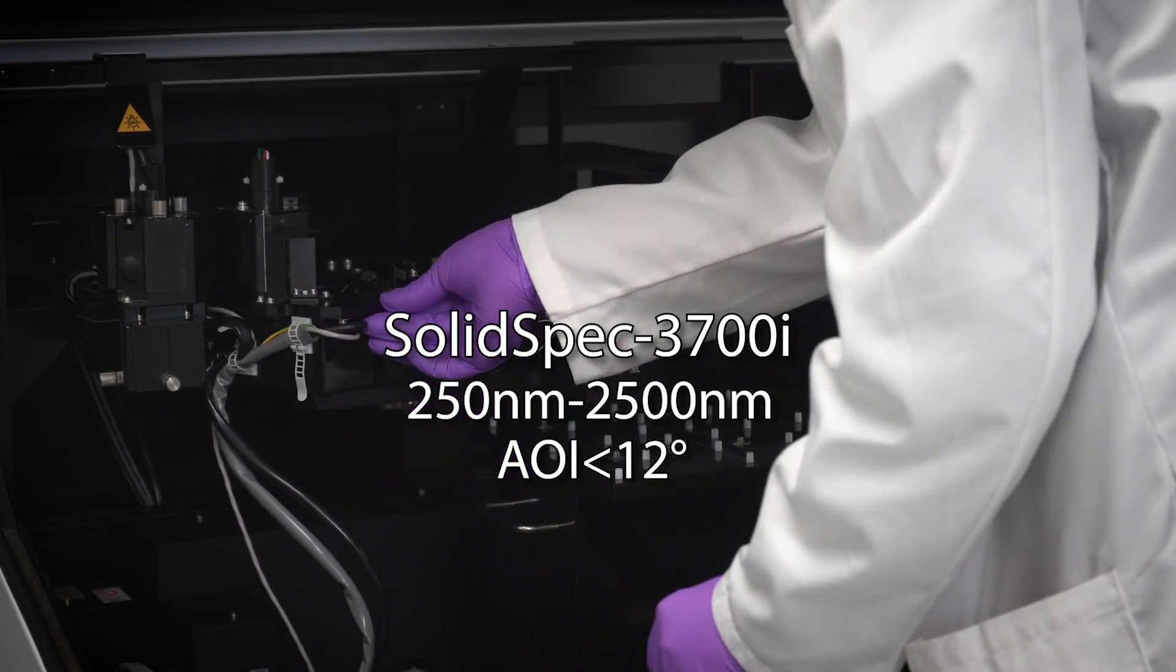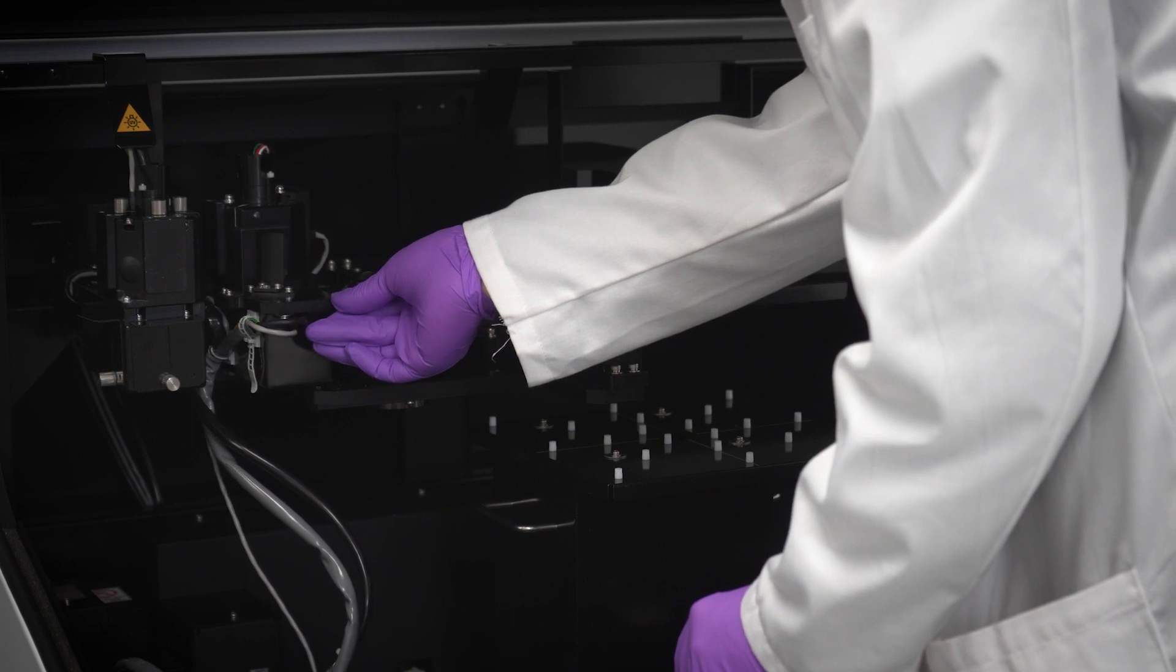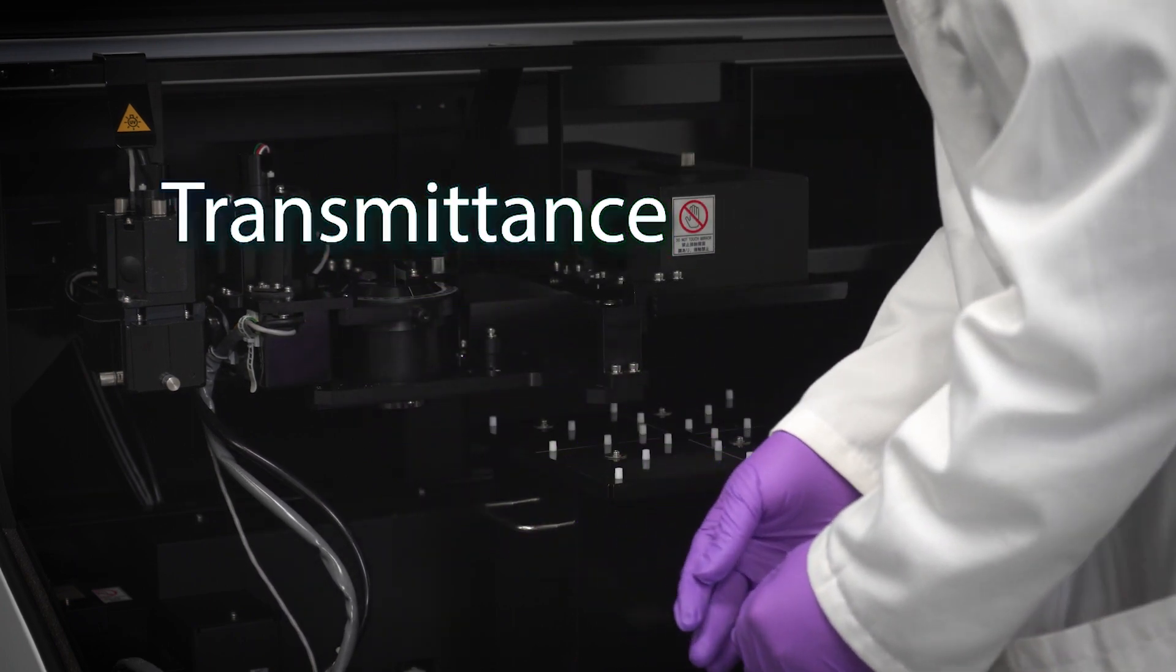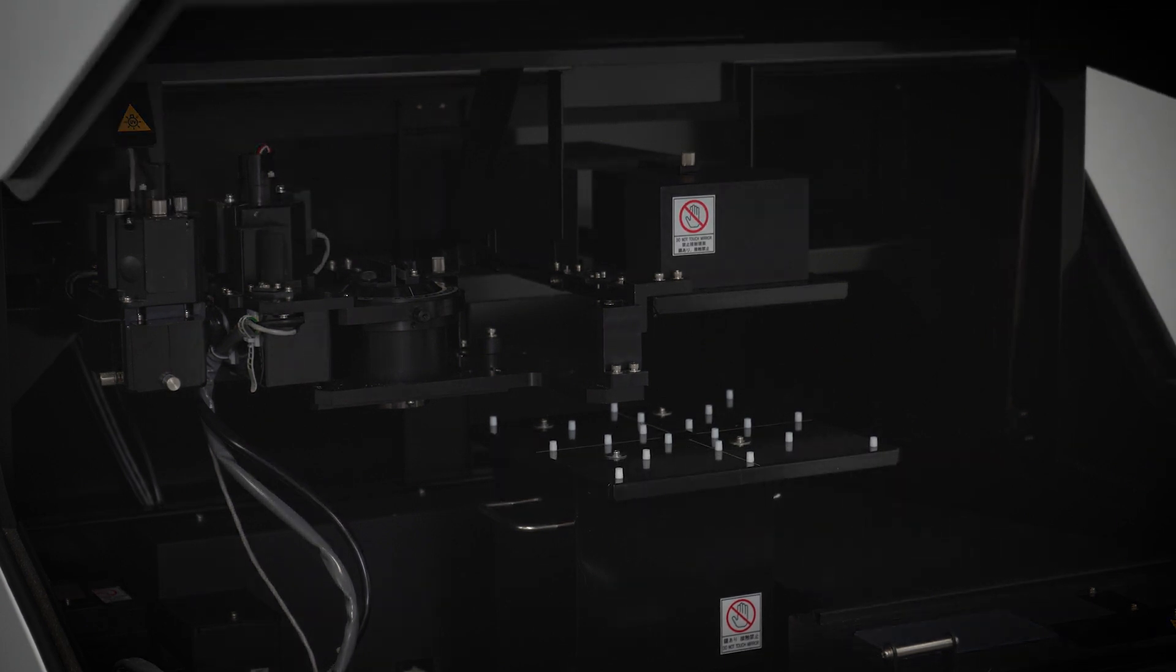The angle of incidence may vary from 5 to 70 degrees. A VASR attachment is good for measuring both transmittance and reflectance at variable incidence angles. In this demo, I will measure the absolute reflectance of a mirror.